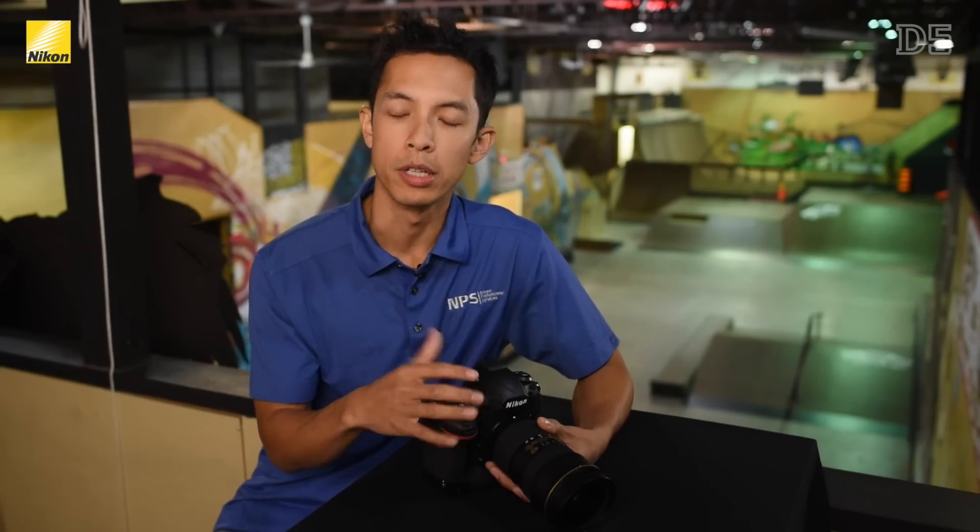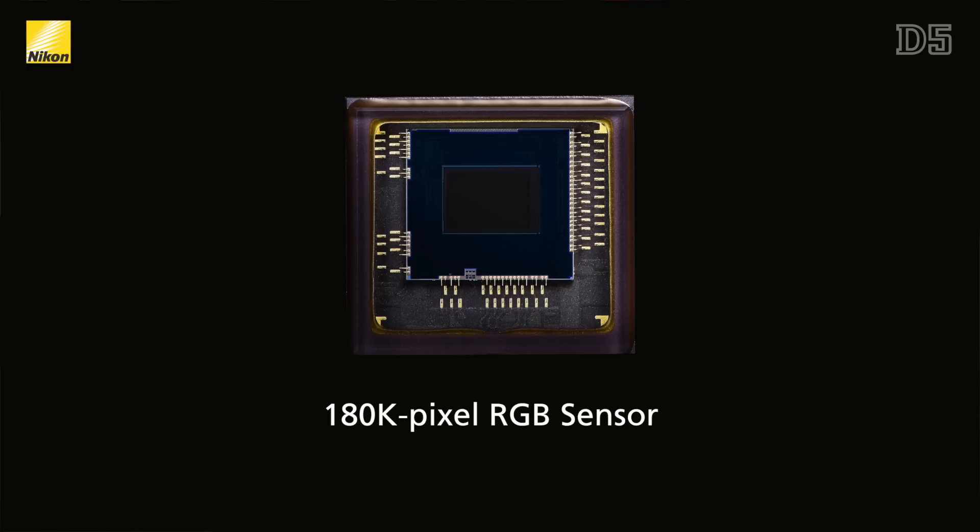Other than the dedicated AF processor, one of the other reasons the autofocus and specifically the face detection on the D5 is much more accurate is because of the brand new metering system. The D5 uses a 180,000-pixel RGB sensor, up from the 91,000-pixel sensor found on the D4S. That sensor is much faster and allows smaller faces to be detected than before.